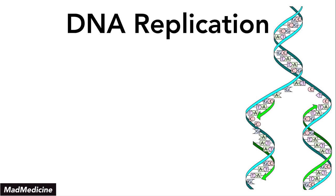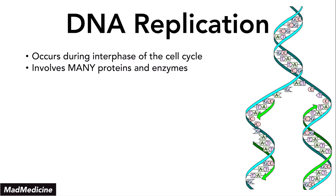So what happens during replication? DNA replication occurs during the interphase of the cell cycle and it involves many, many proteins and enzymes. In fact, it is a very complex process. Even as we are describing it to you for your testing purposes, we are simplifying it because it gets very nitty-gritty and very complicated. It's not as simple as we are often taught in the school setting.